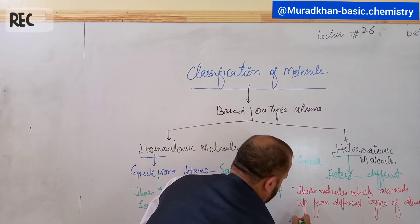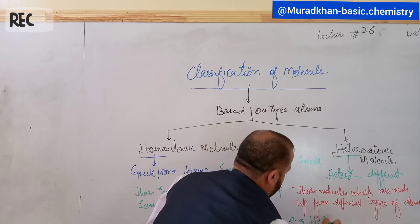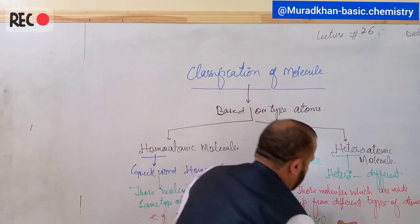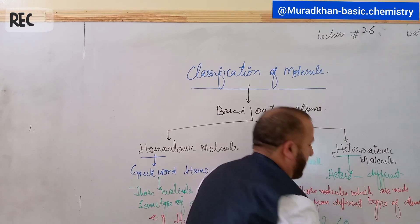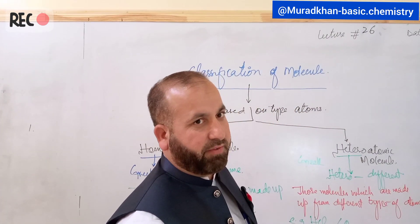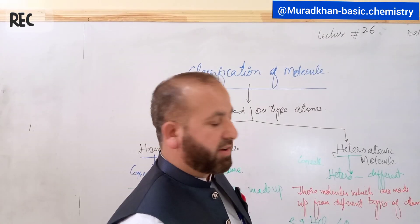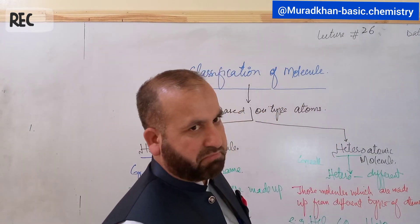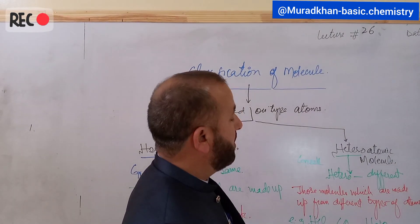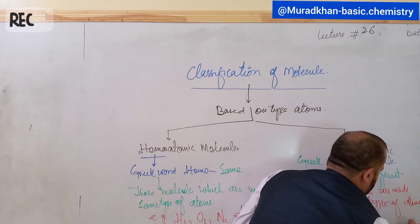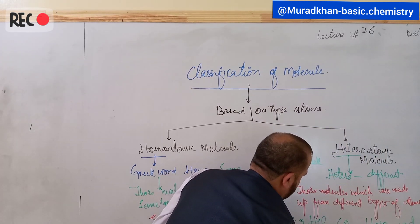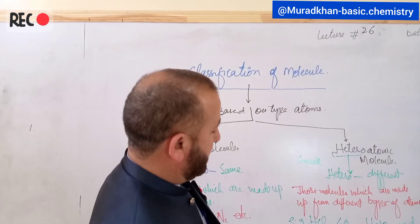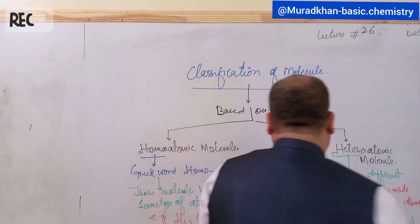For example, HCl is made up from two different types of atoms, that is hydrogen and chlorine. CO2, carbon dioxide, is made up from carbon and oxygen. Nitric acid is made up from three different types of atoms. And H2SO4 is made up from hydrogen, sulfur, and oxygen.